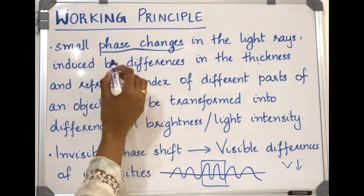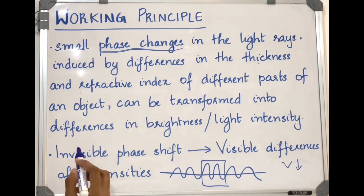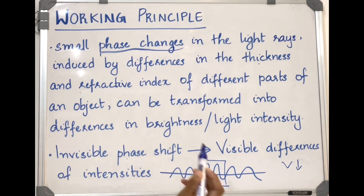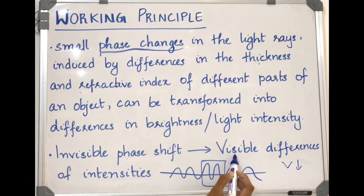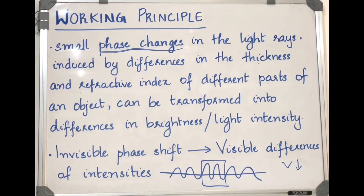These phase changes are invisible to the human eye. What the phase contrast microscope does is convert these phase shifts or phase changes into visible differences of intensity or brightness, which can then be detected by the human eye.